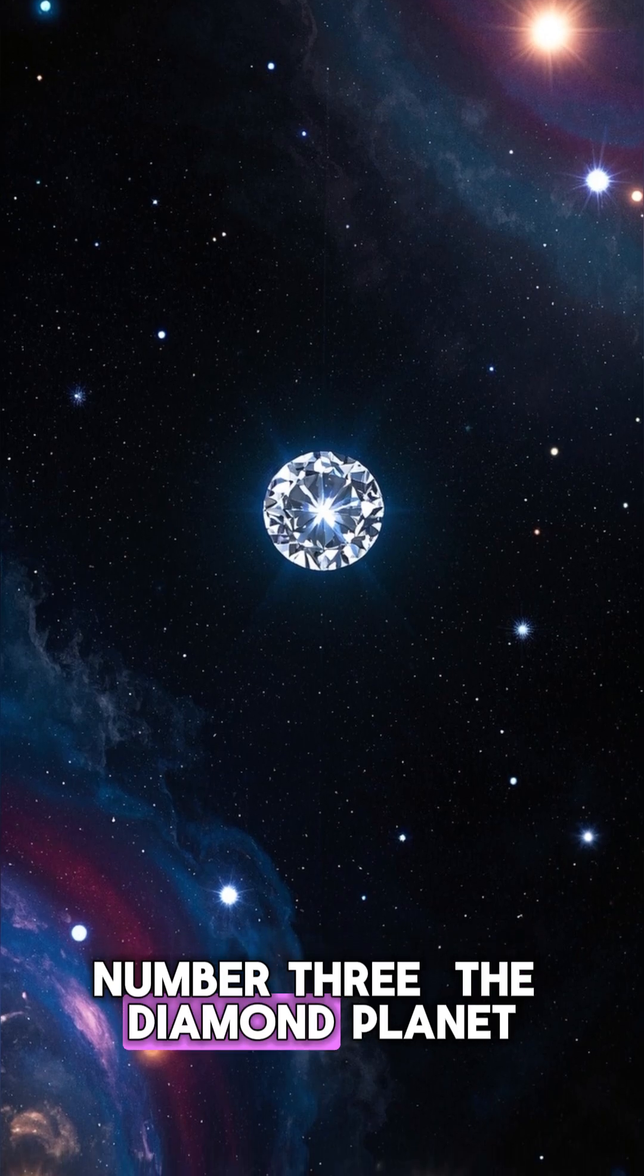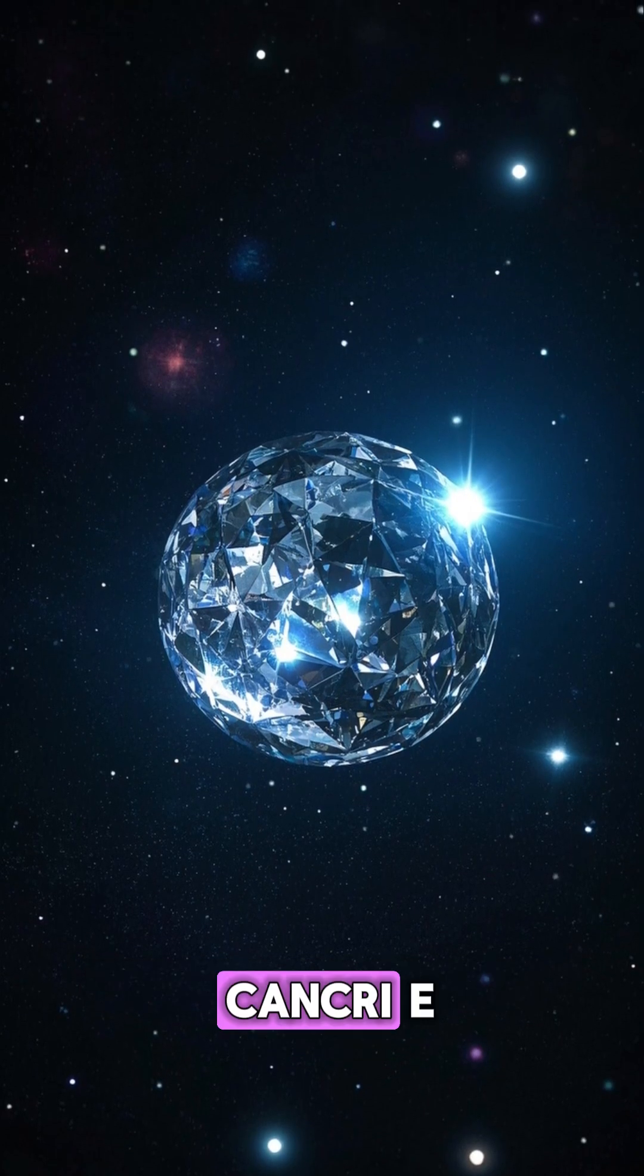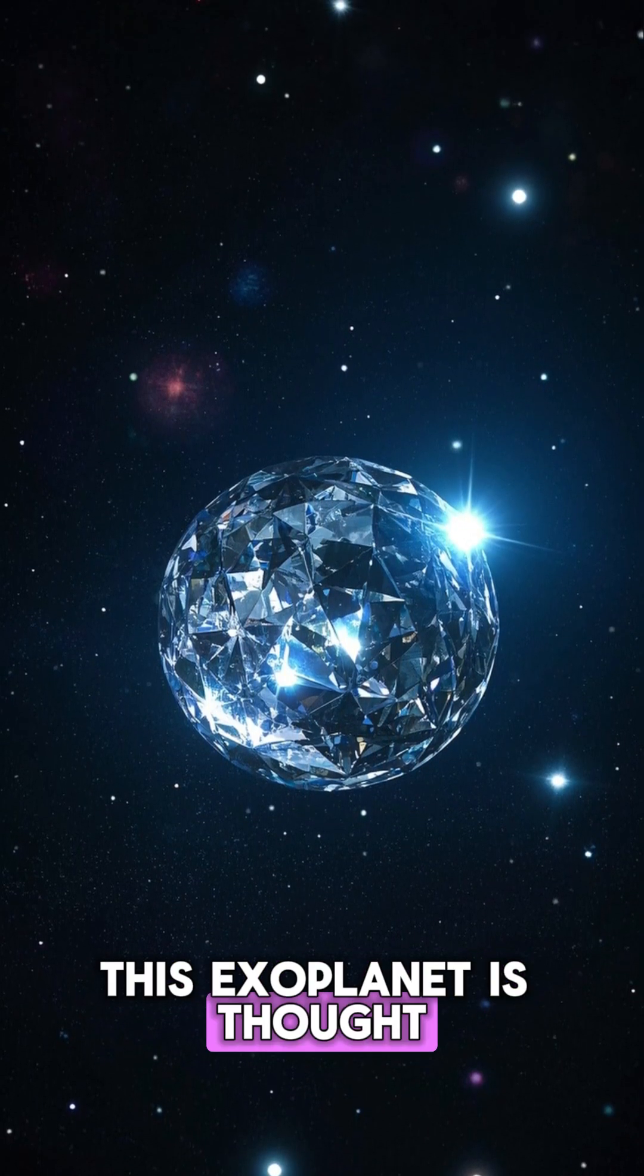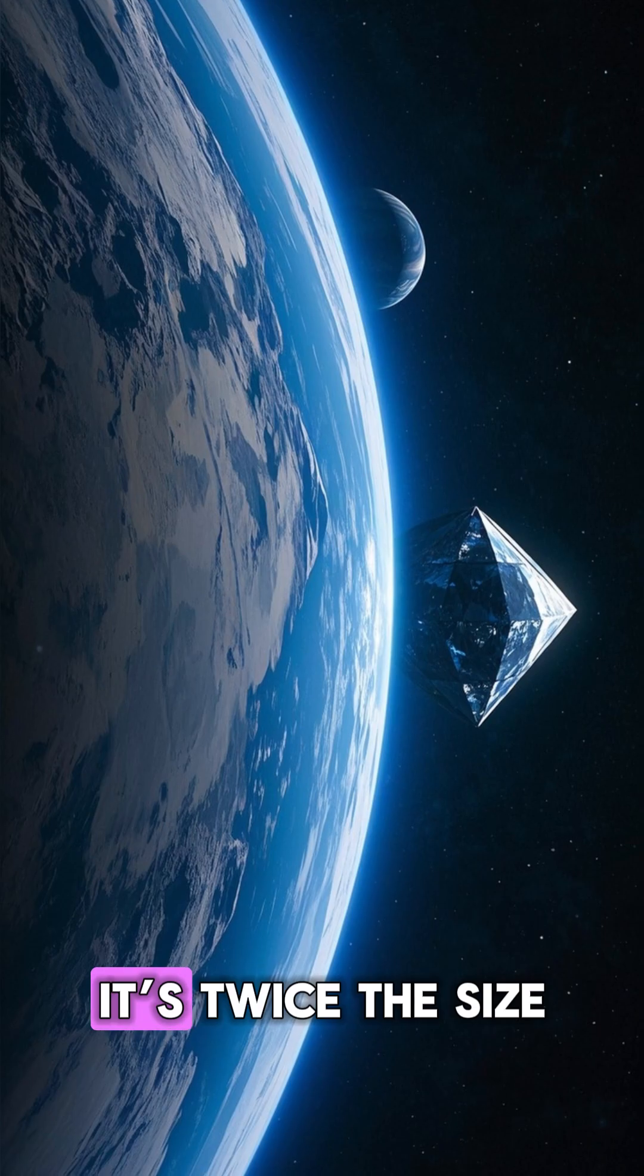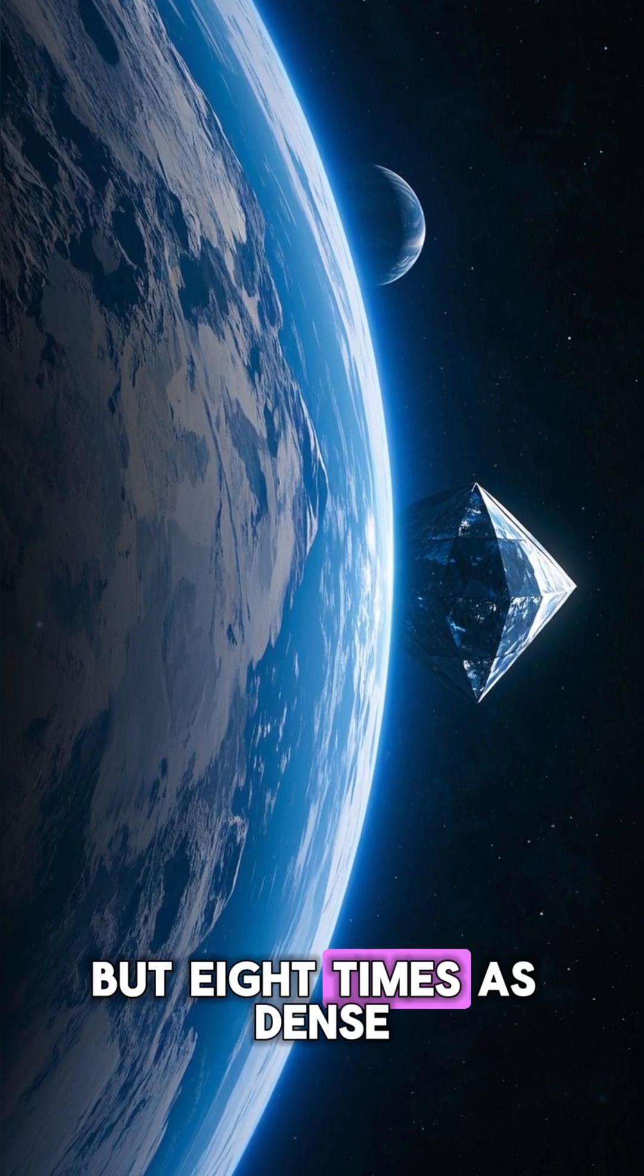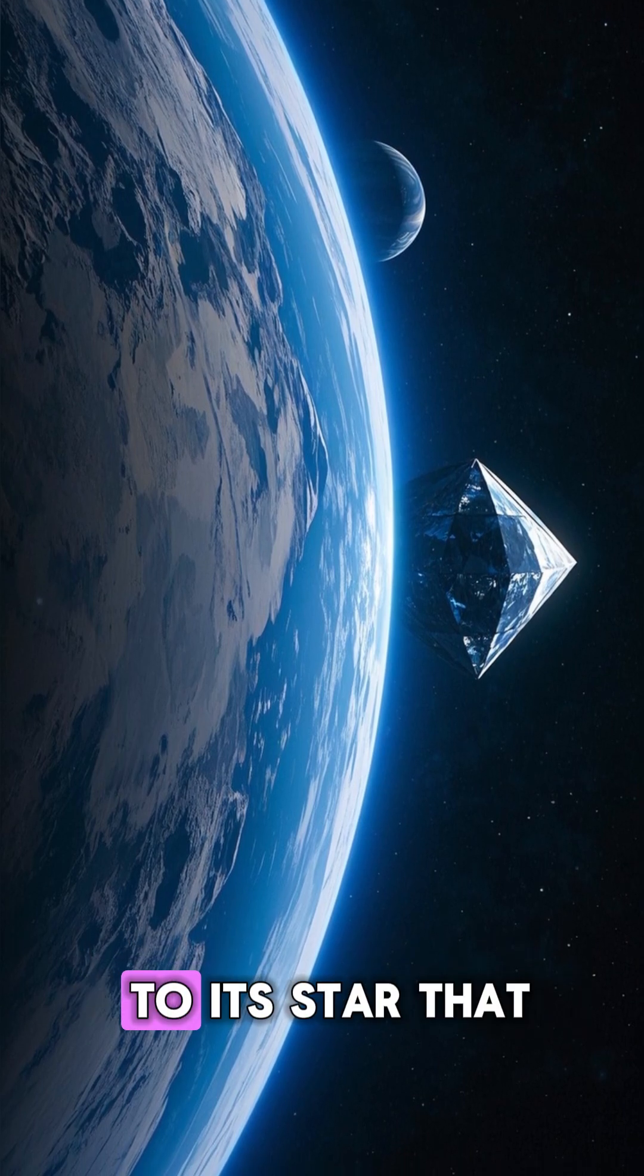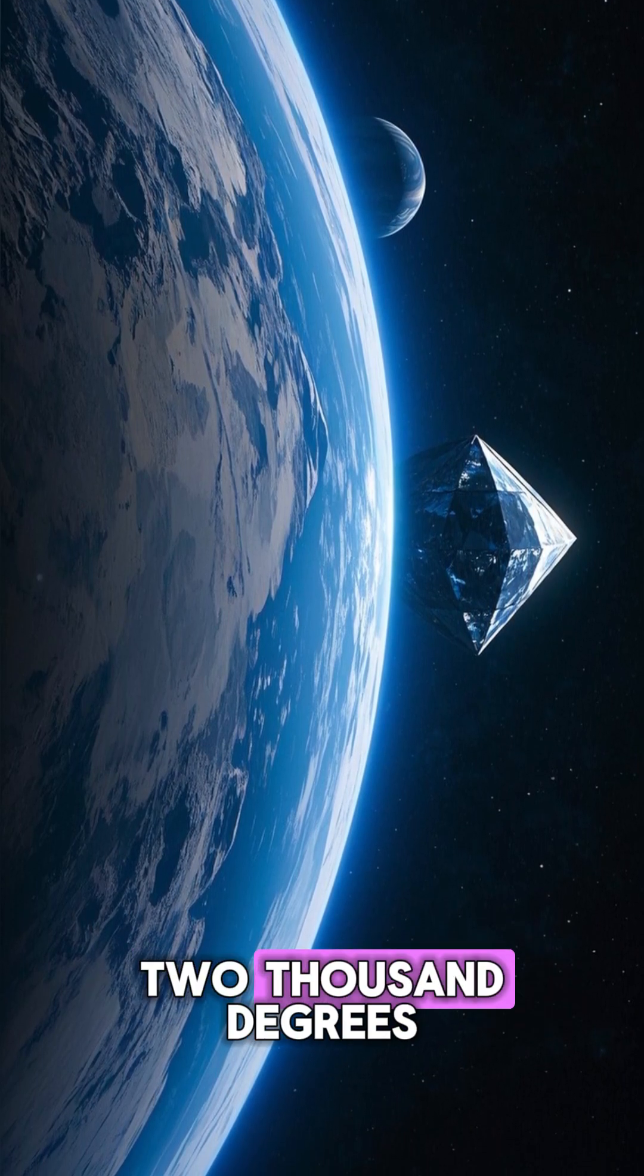Number 3: The Diamond Planet, officially known as 55 Cancri e. This exoplanet is thought to have a carbon-rich composition, meaning its core may be made of diamond. It's twice the size of Earth but eight times as dense, and orbits so close to its star that its surface is over 2,000 degrees Celsius.